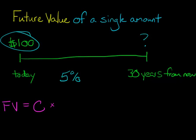In this case, it's going to be that 5%. 1 plus r to the t power. And the t is going to be the number of periods, in this case 30 years.